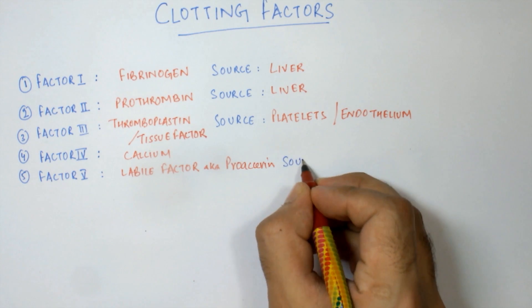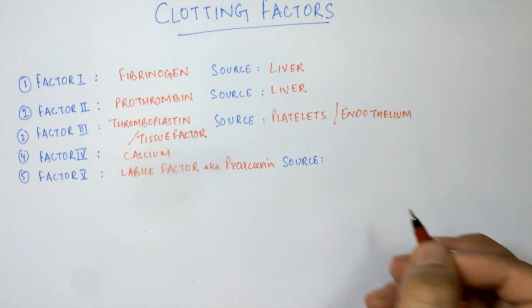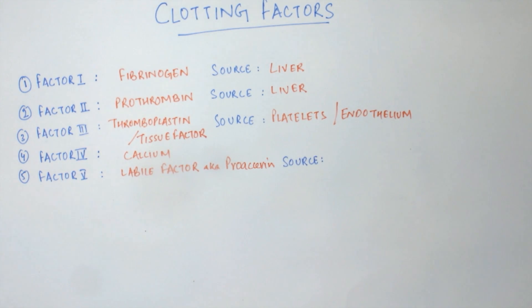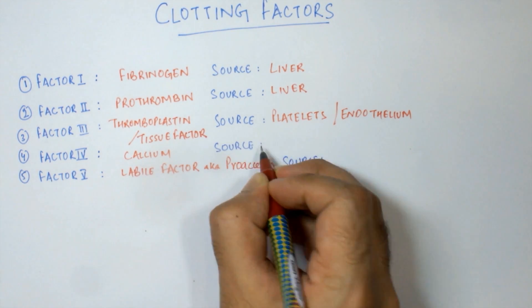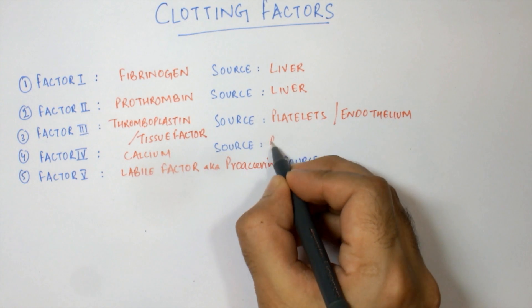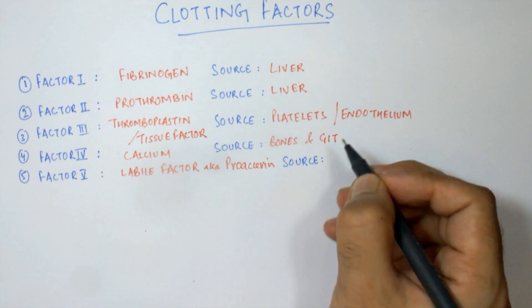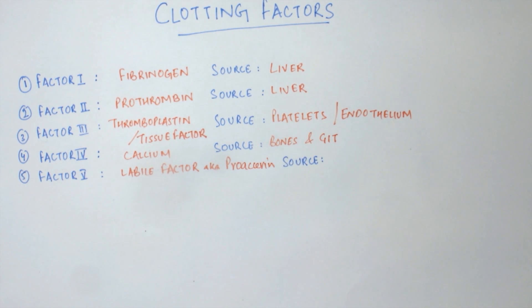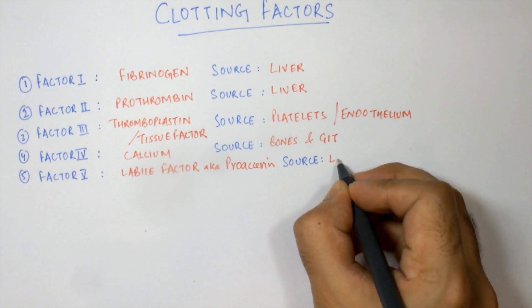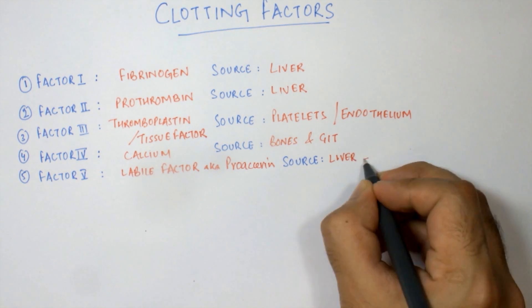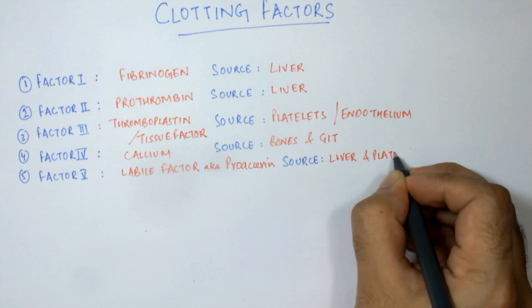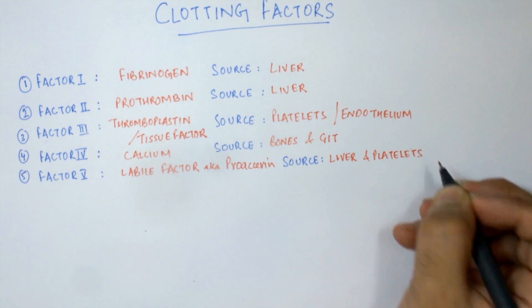I forgot to mention the source of calcium — calcium is derived from the absorption from bone and also from gastrointestinal tract absorption. Coming to factor number five, also known as the labile factor or proaccelerin, its source is the liver and the platelets.